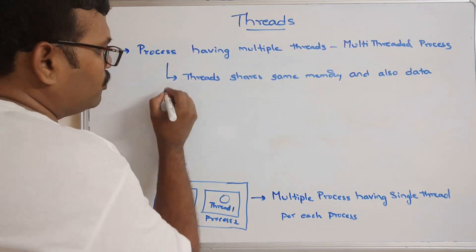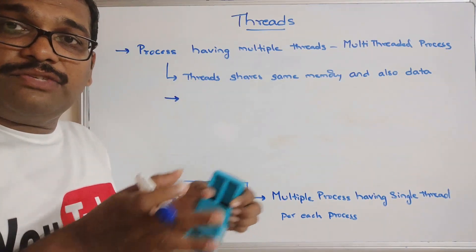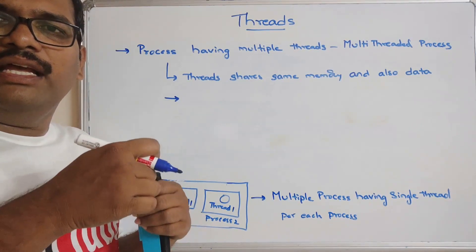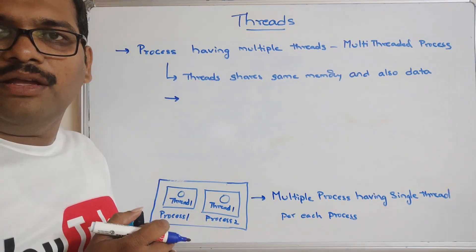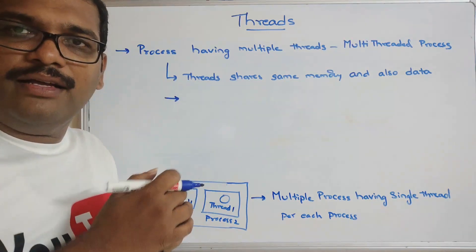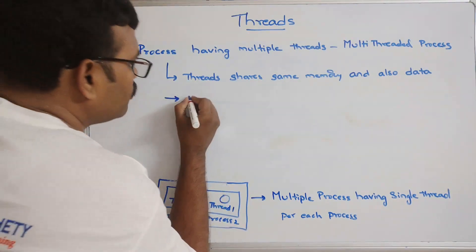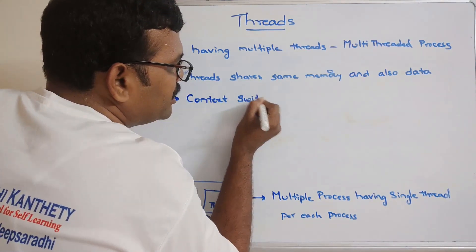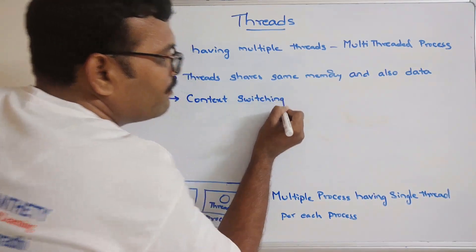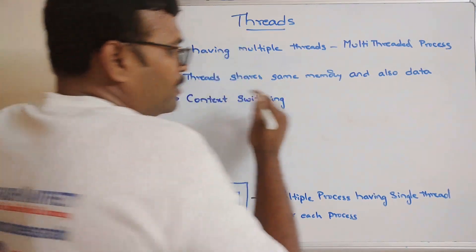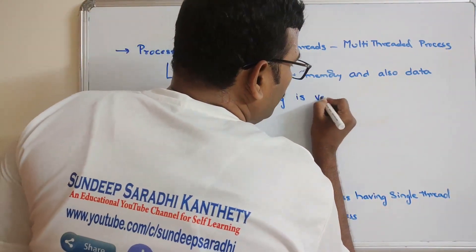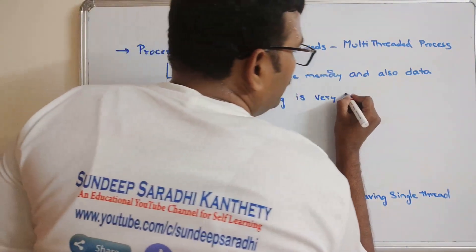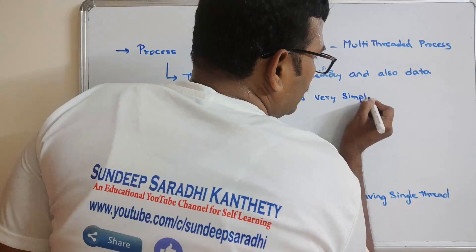Switching from one thread to another thread is very simple — we call it context switching. Navigating from one thread to another thread is simple because both threads are available in the same memory. So context switching is very simple.